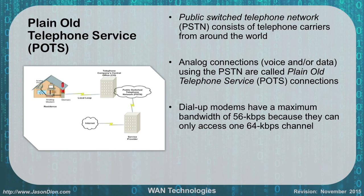The old school method is called plain old telephone service, or POTS. It runs on the public switched telephone network, the PSTN, which consists of all telephone carriers around the world. When we first started getting on the internet, we all used dial-up modems using POTS service. We would dial over our phone line into our ISP and they would connect us to the internet. These analog connections could carry voice or data, but you're limited to 56 kilobits per second — considerably slow — because it only accessed one 64 kilobit channel.